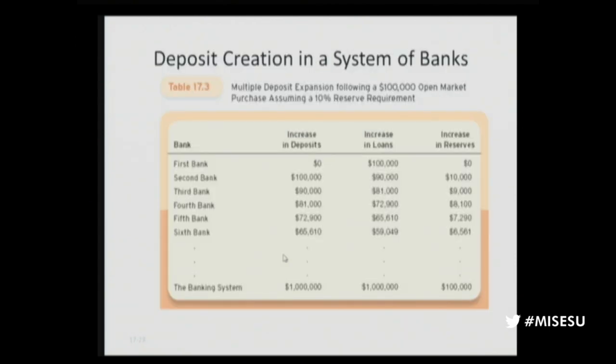When it goes through all stages, the maximum increase in deposits is 10 times the initial $100,000 — $1 million in new dollars is created, along with $1 million in new loans. All of that is backed by $100,000, which is 10%. Each bank holding deposits holds 10%, and it all adds up to the reserves that were created.